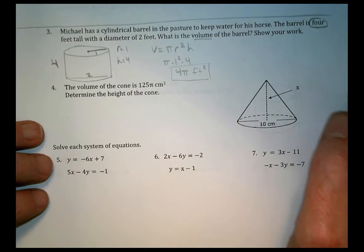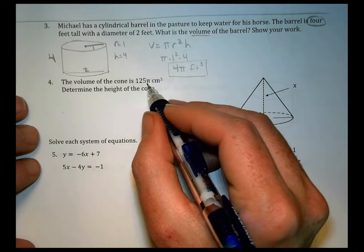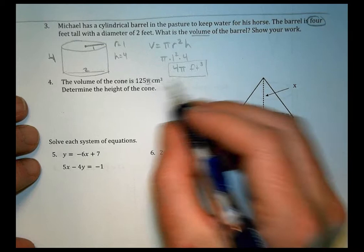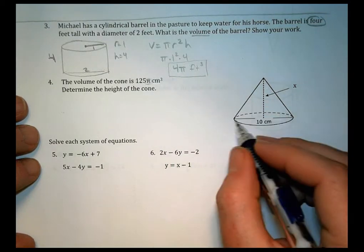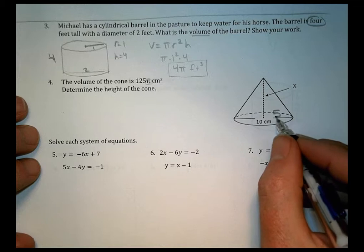For number four, it says the volume of the cone is 125 pi, in terms of pi, centimeters cubed. Determine the height. Well, it gave us a diameter of 10, which means the radius is half of that. So the radius is five.